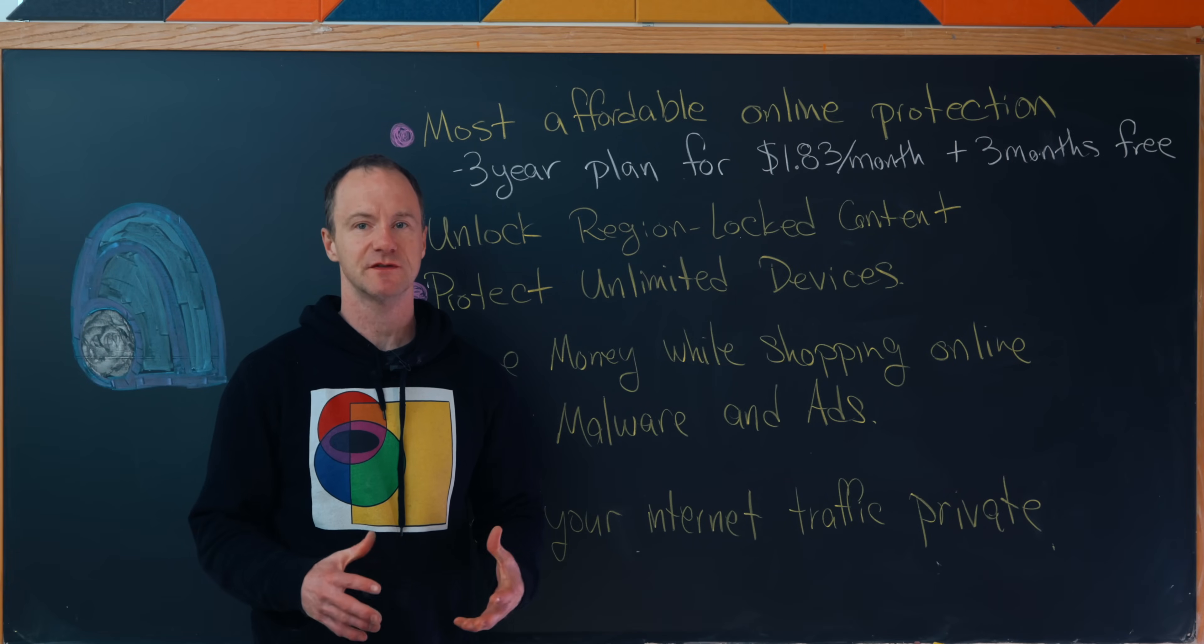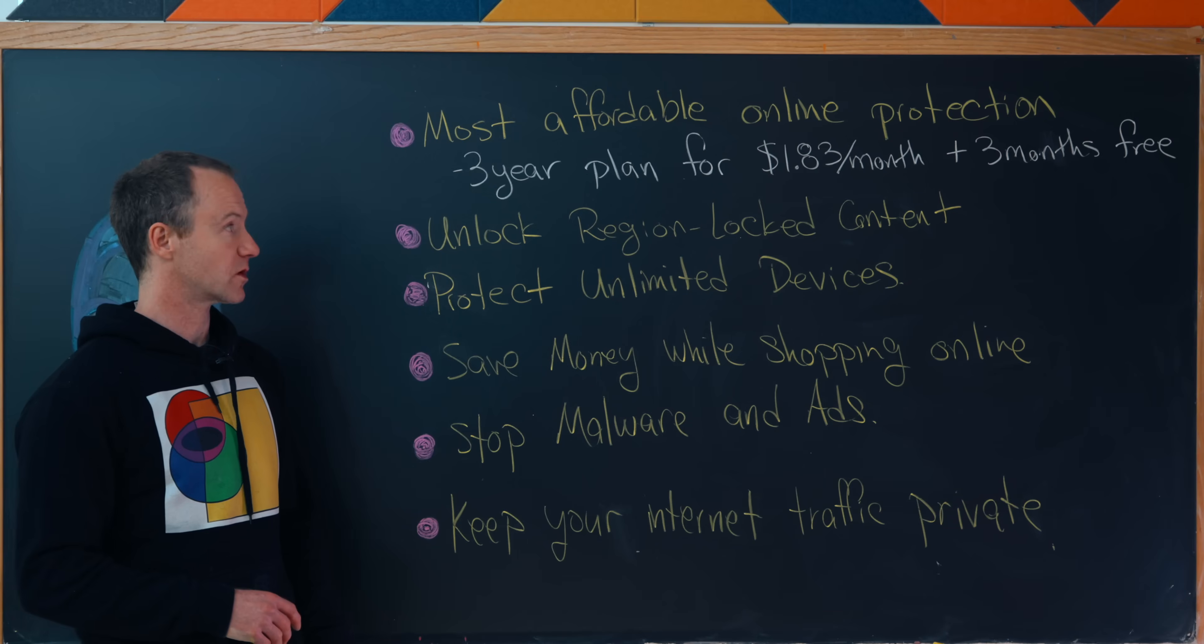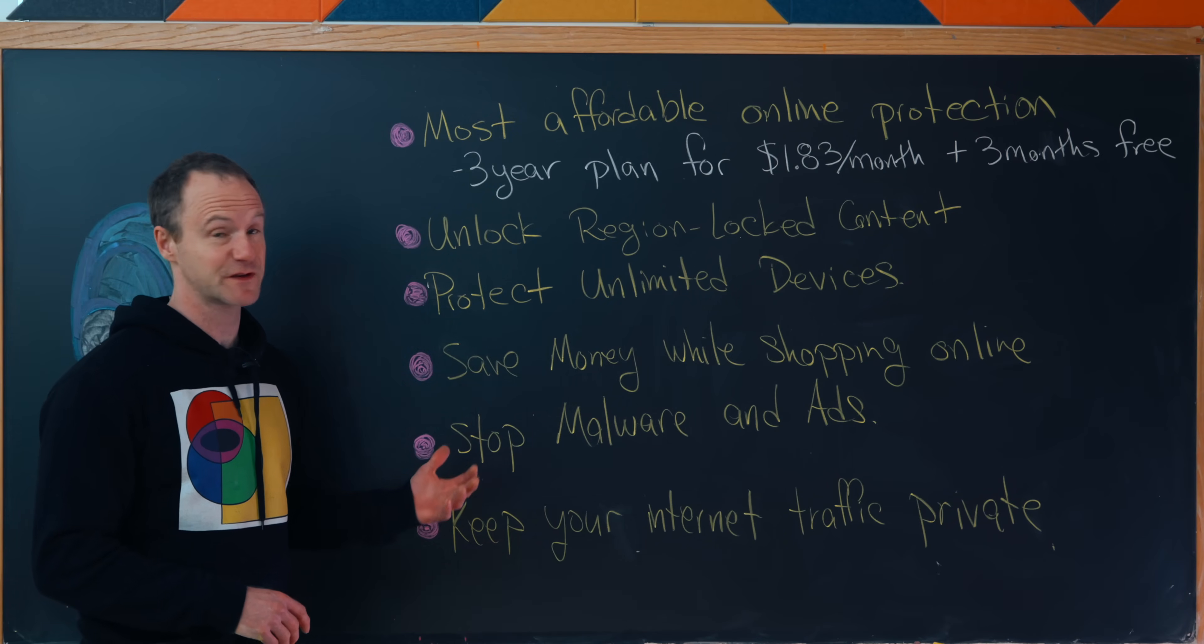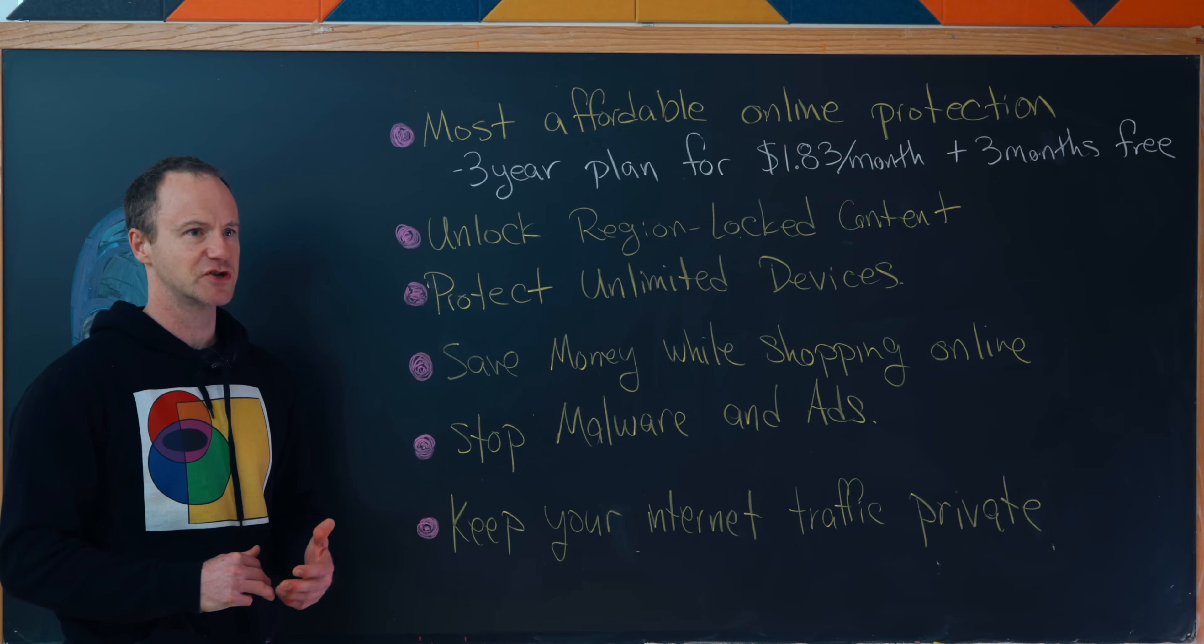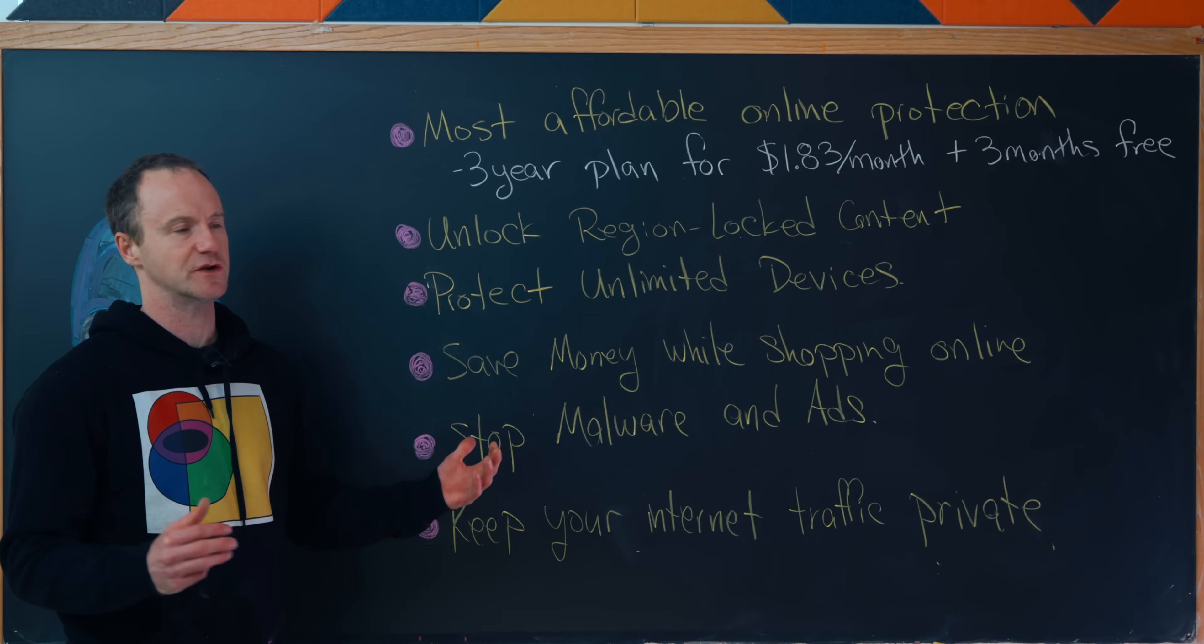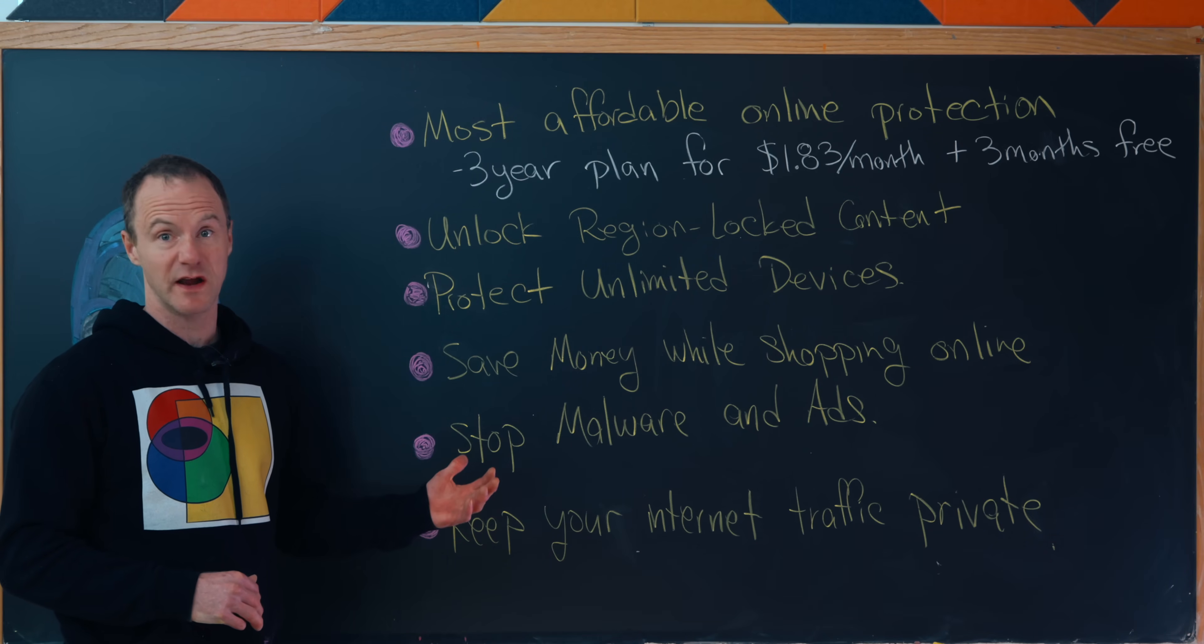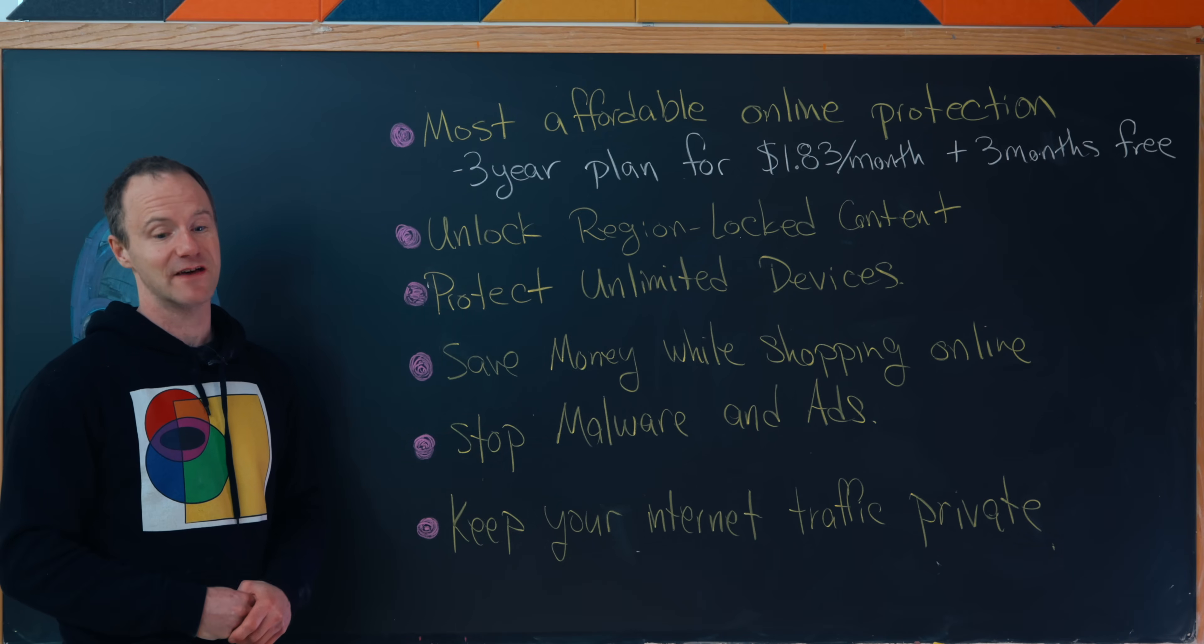Now, I'd like to talk to you about the sponsor of today's video, Atlas VPN. First off, they are the most affordable choice. A three year plan is only $1.83 a month, and you get three months for free. I think that's a crazy good deal. You can set your IP address to be any country. So when I'm traveling, maybe I'll set it back to the US to watch my favorite shows that I've been watching at home. Or maybe when I'm at home, I'll set it to somewhere in Europe or Australia and unlock some content that is not available in the United States.